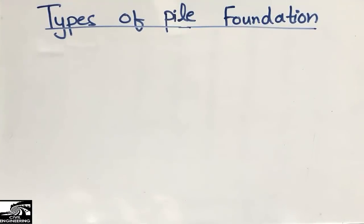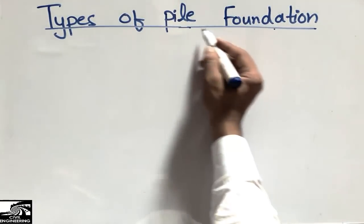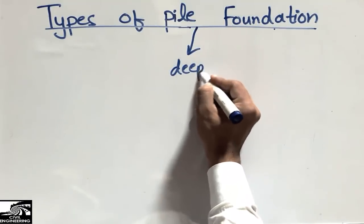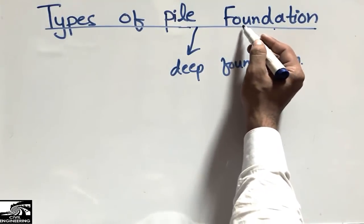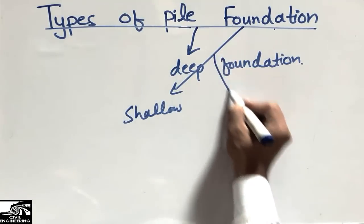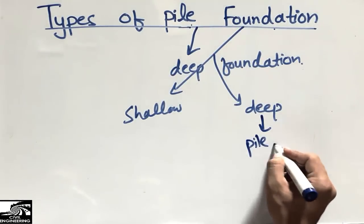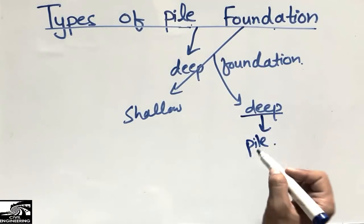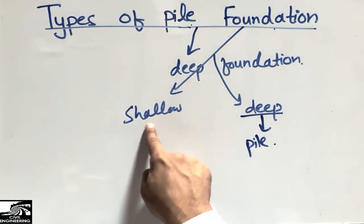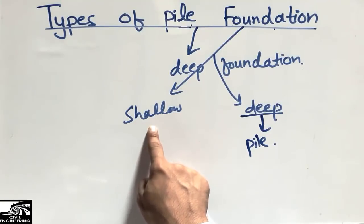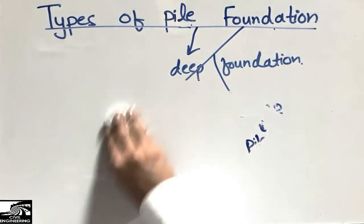Hello guys, welcome back to the Civil Engineering YouTube channel. Subscribe to our channel for more civil engineering videos. Today our lecture is about the types of pile foundation. Pile foundation is a subtype of the deep foundation. There are two main types of foundation: shallow foundation and deep foundation. Pile foundation comes under deep foundation, and it is used where shallow foundation cannot support the load of the structure.